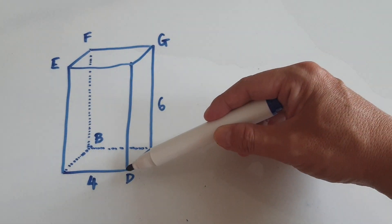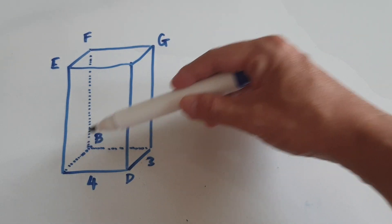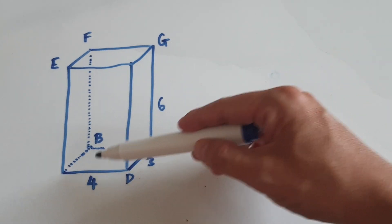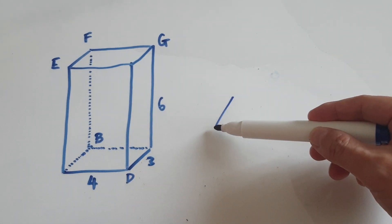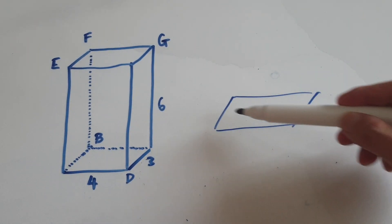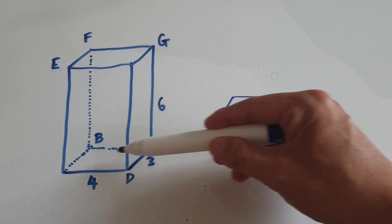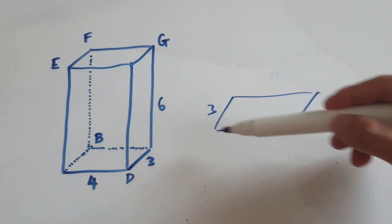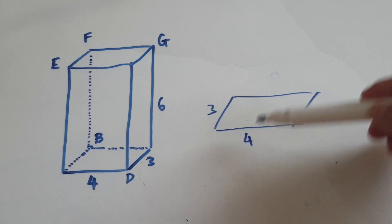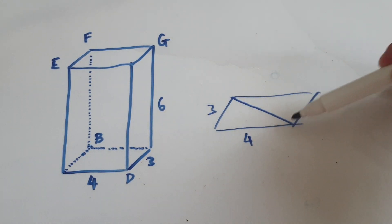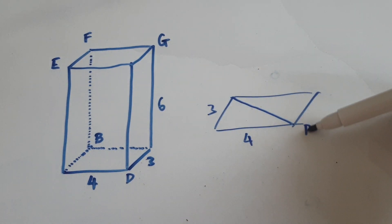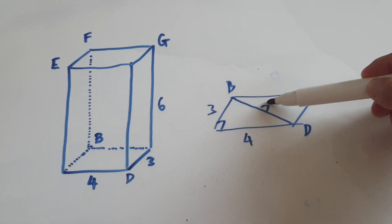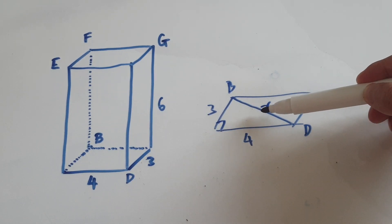So the first one, let's find DB. The diagonal length DB — if you look at the base of that cuboid, this length here is the same as this: 3, the cross here is 4, and you're trying to find out this length here. This is D, and this is B. So this is a right-angled triangle. Let's try and work out the diagonal length.